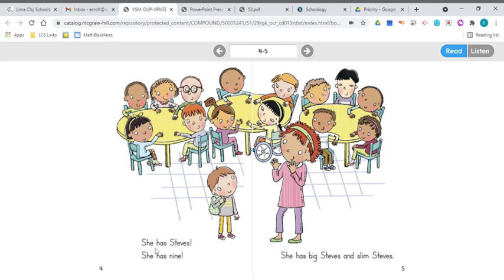But she has Steve's. She has nine. She has big Steve's and slim Steve's. So there's more than one boy in this class named Steve. There must be nine, nine boys in that class named Steve.